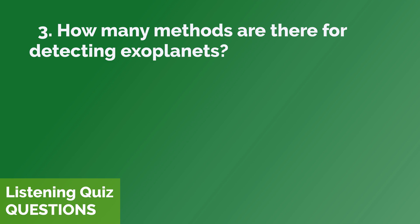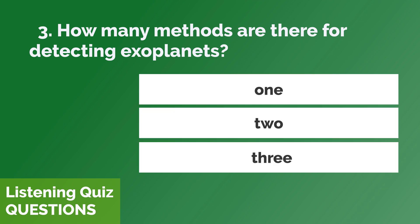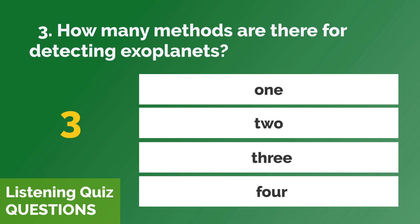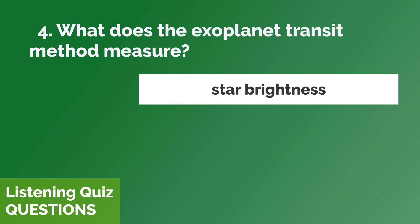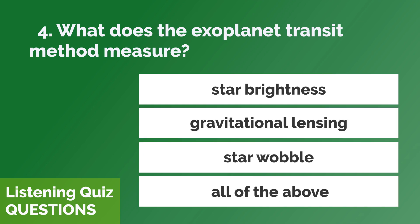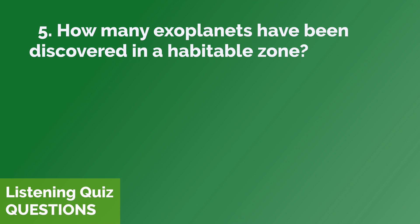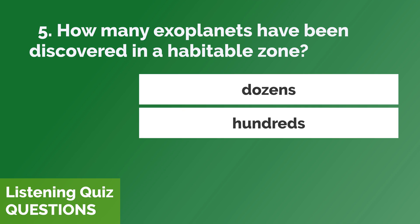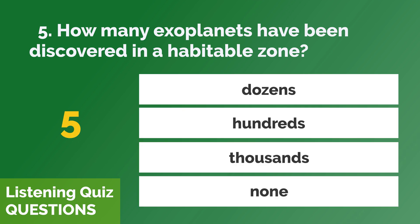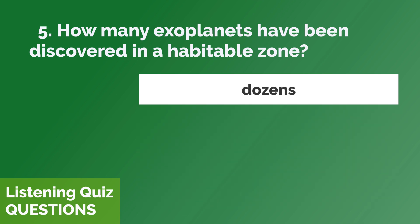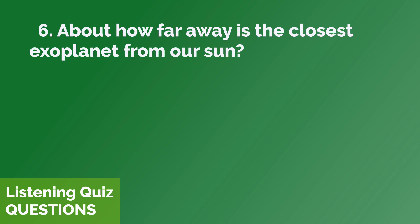How many methods are there for detecting exoplanets? How many exoplanets have been discovered in a habitable zone? About how far away is the closest exoplanet from our Sun?